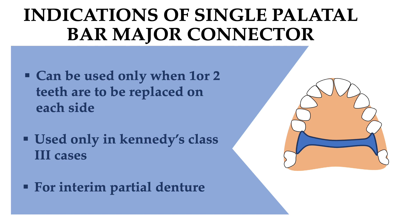The indications of the single palatal bar major connector: it can be used only when one or two teeth are to be replaced on each side — meaning only for small edentulous areas, not broad edentulous areas. It is used in Kennedy's Class III cases, i.e., in tooth-and-tissue-supported areas, not in Class I or Class II cases.